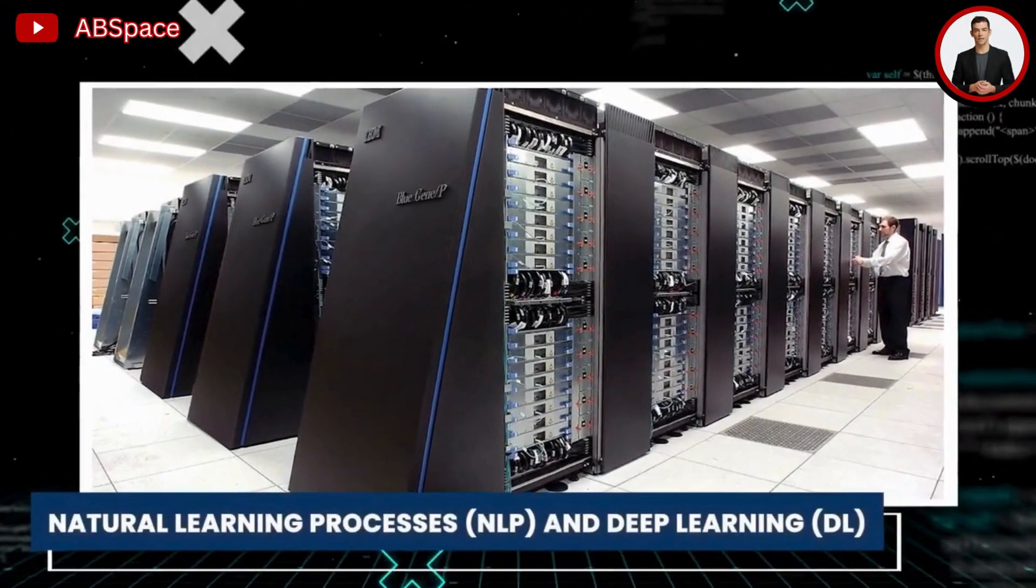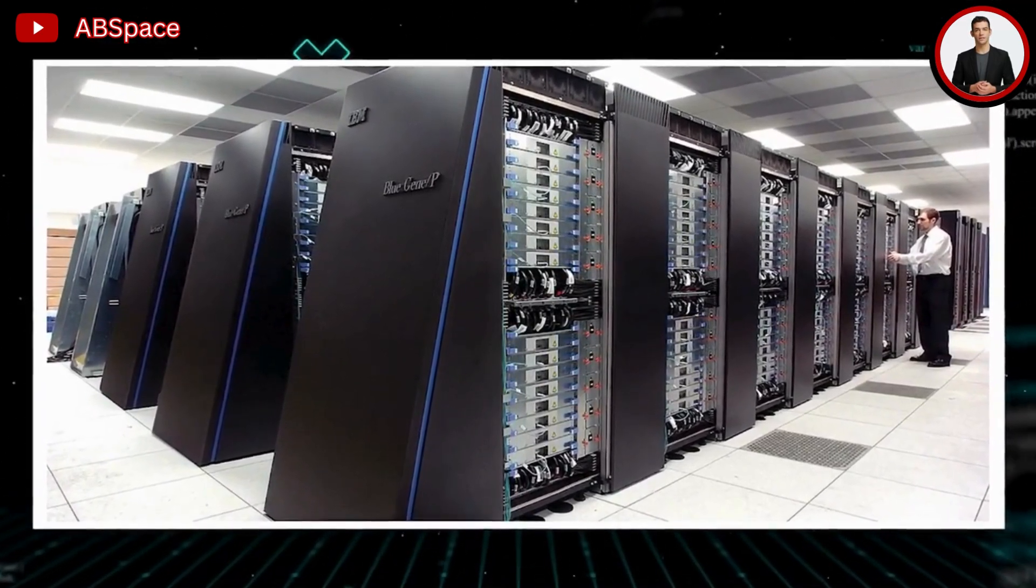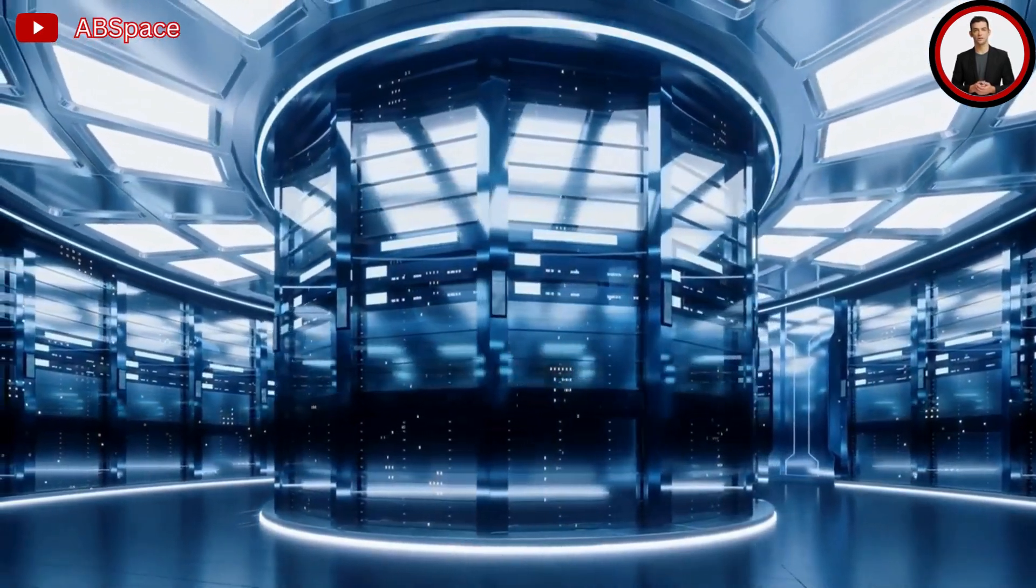As Tesla's data sources continue to expand and its supercomputer becomes a rather less capable imposter of its former self due to the constraints of Moore's law—the D1 Dojo chip is reported to have 50 billion transistors on it—Musk and the rest of the team will be required to investigate new methods for managing the enormous amounts of data that are generated by the company's network of automobiles.